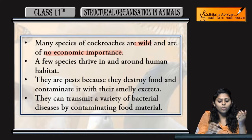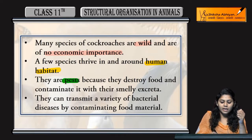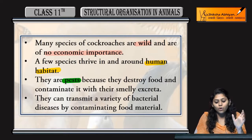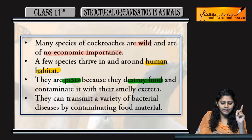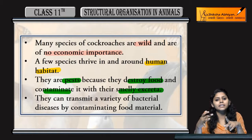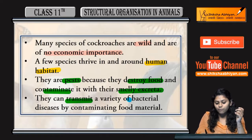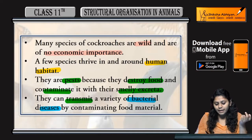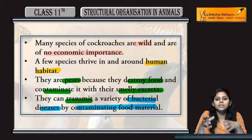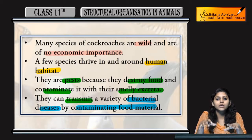Cockroaches ki kuch species live near human habitat and they are pests — pest isliye hain because they destroy food and contaminate it with their smelly excreta. Humara food destroy karti hain, contamination cause karti hain. They can transmit a variety of bacterial diseases by contaminating food materials. Contamination karengi, bacterial diseases ko hum tak pahunch aengi — so yahi unki economic importance hai.